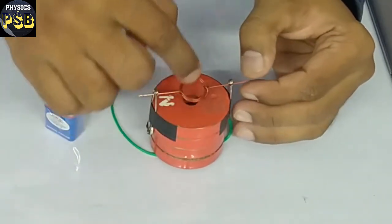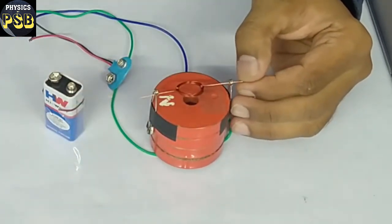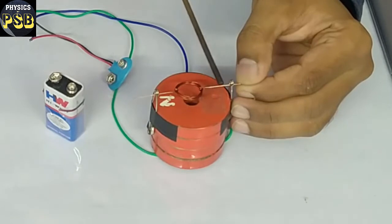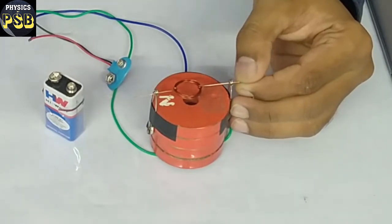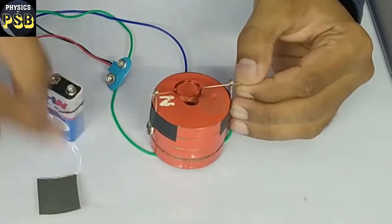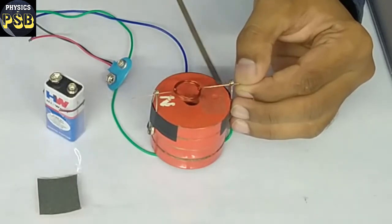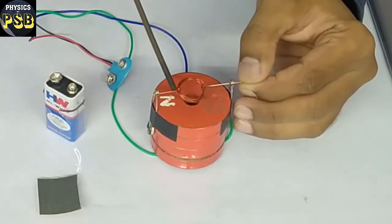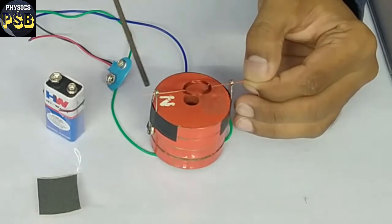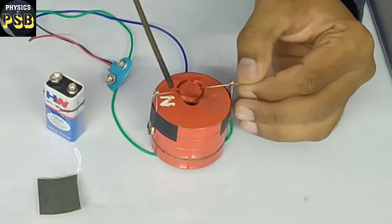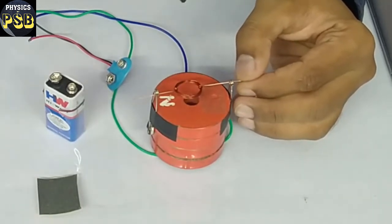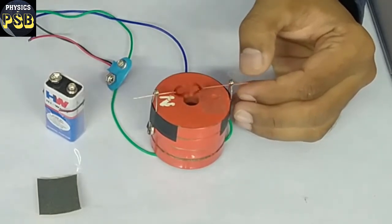Here I have made some changes. If you look at this carefully, here I have removed the enamel with the help of sandpaper. Here I have removed the enamel partially, whereas here the enamel is removed completely. Now this acts as commutator in our homemade motor.